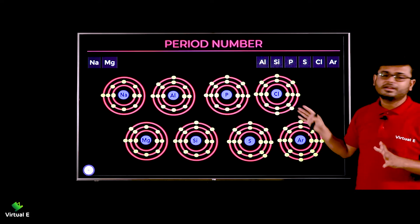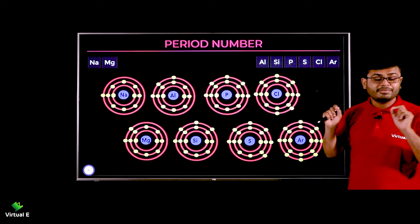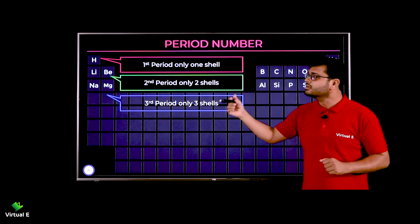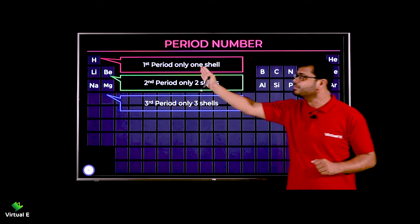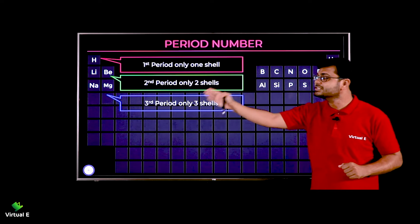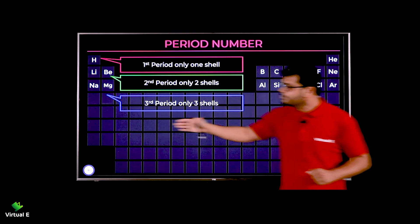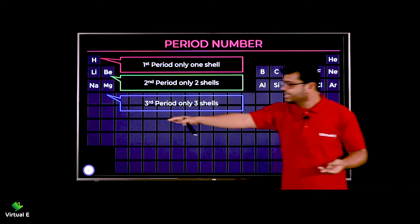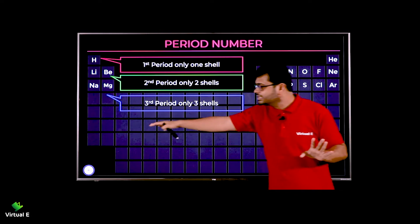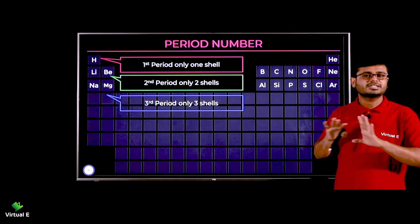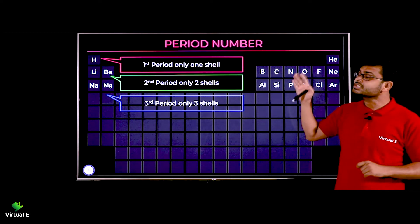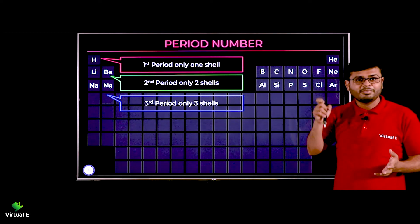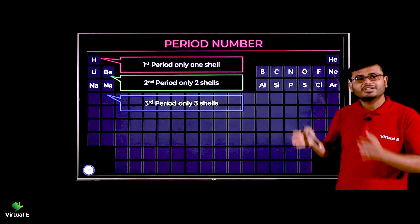So the conclusion is: third period has three shells, second period has two shells, first period has one shell. For the fourth period there will be four shells, fifth period five shells, sixth and seventh likewise. This is how we assign the period number — seven periods means seven shells.